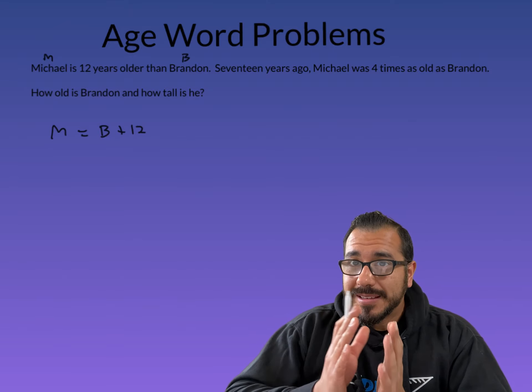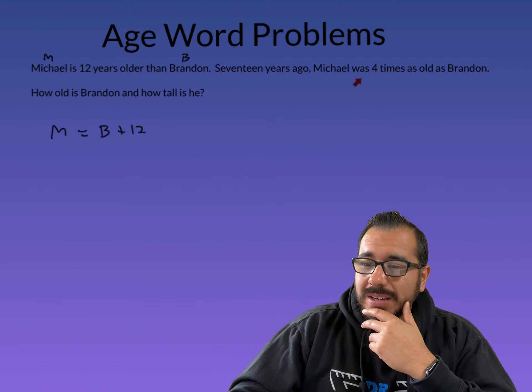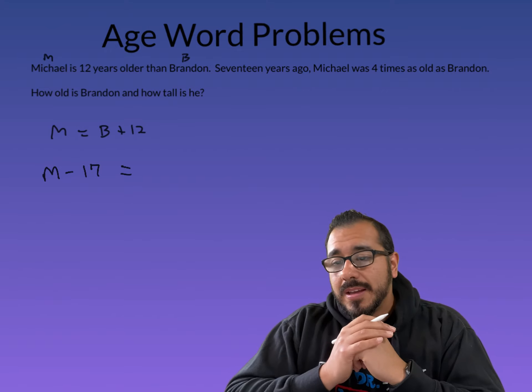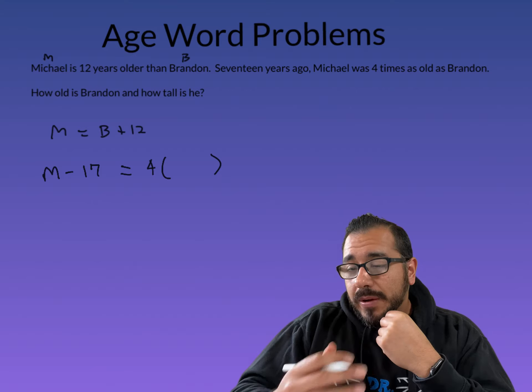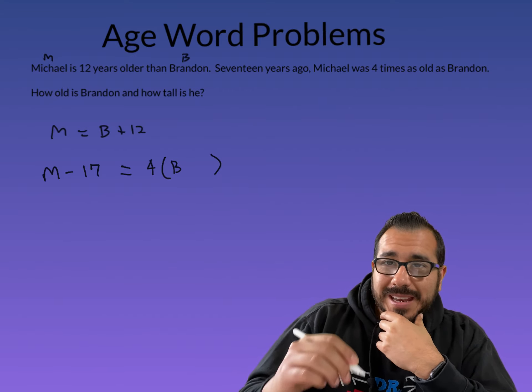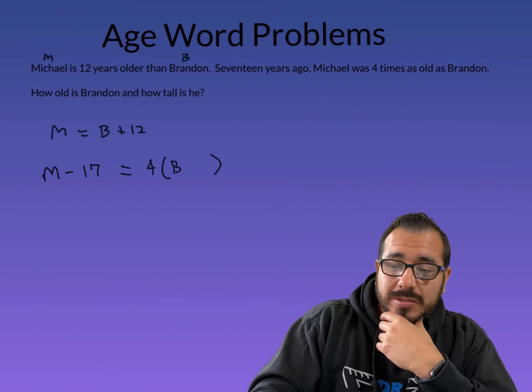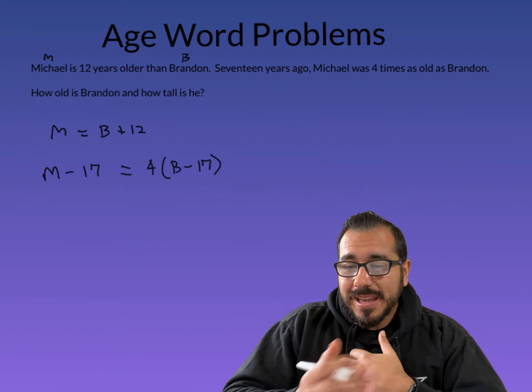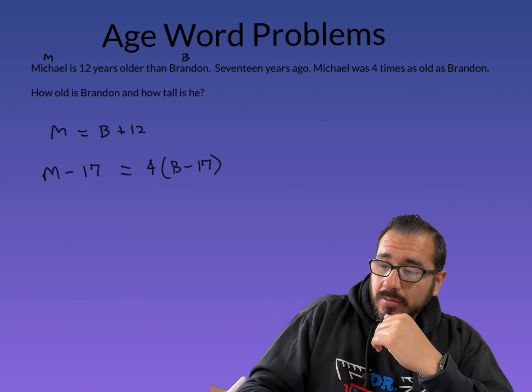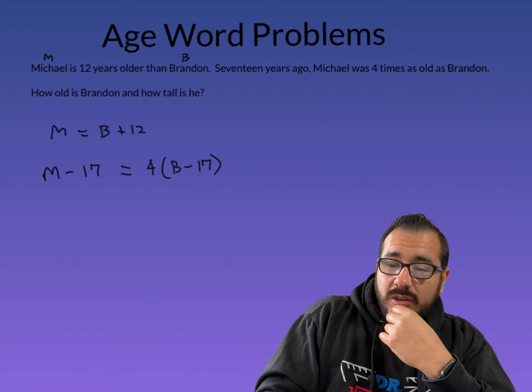Now, '17 years ago' — so whatever ages they are now, we subtract 17 because we're looking back 17 years, so their ages would be less. 'Michael was' — just like 'Michael is' — so we say Michael minus 17. And he was four times as old as Brandon, but not Brandon's age right now — his age 17 years ago. So that gives us: M − 17 = 4(B − 17).